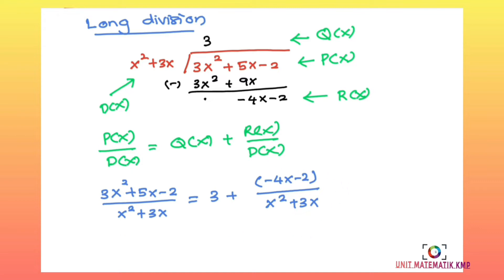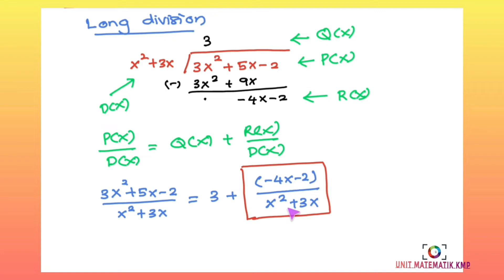After doing the long division, we check that this part is now a proper fraction. The degree of the numerator is 1 and the degree of the denominator is 2, so the degree of the numerator is less than the degree of the denominator — it is a proper fraction. We can now proceed to partial fractions.